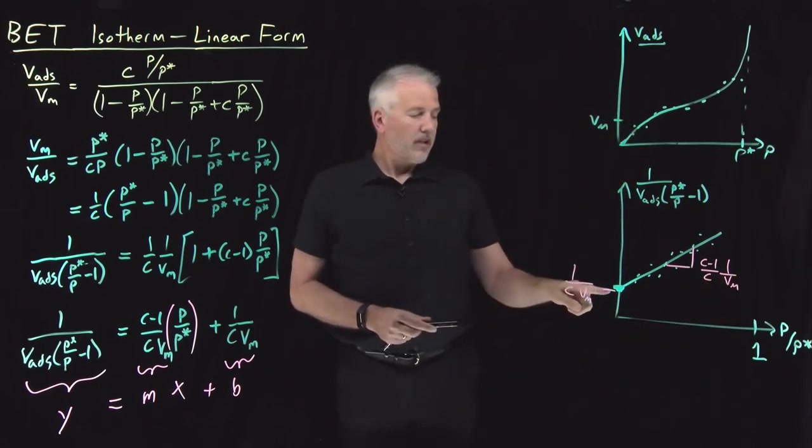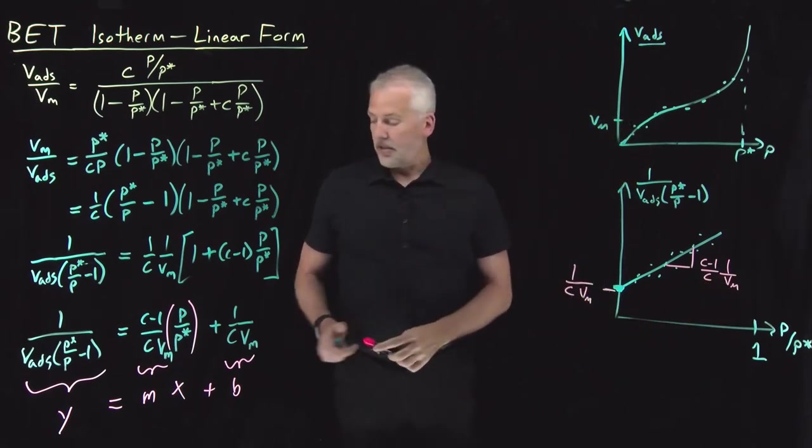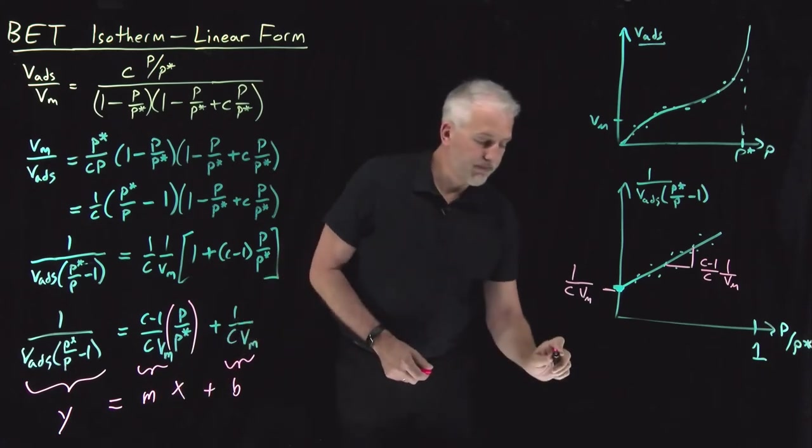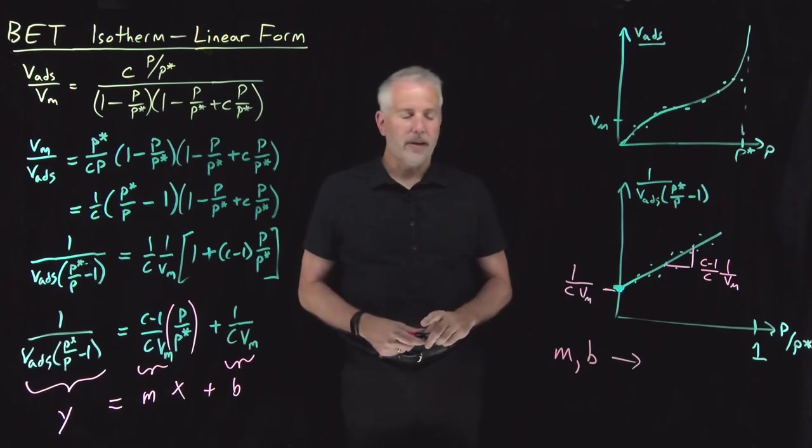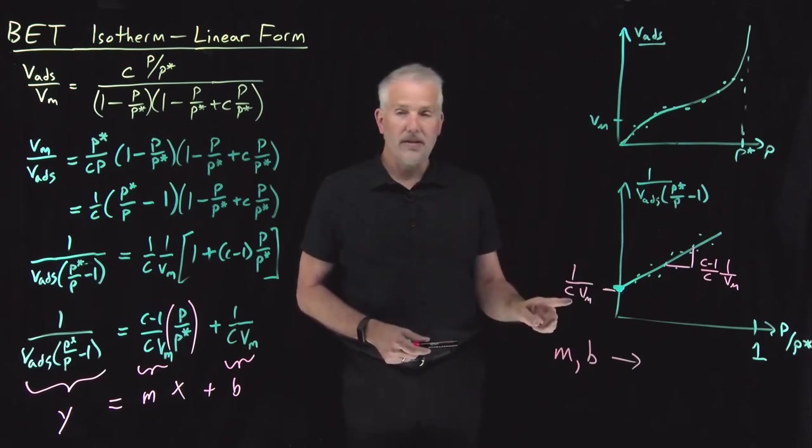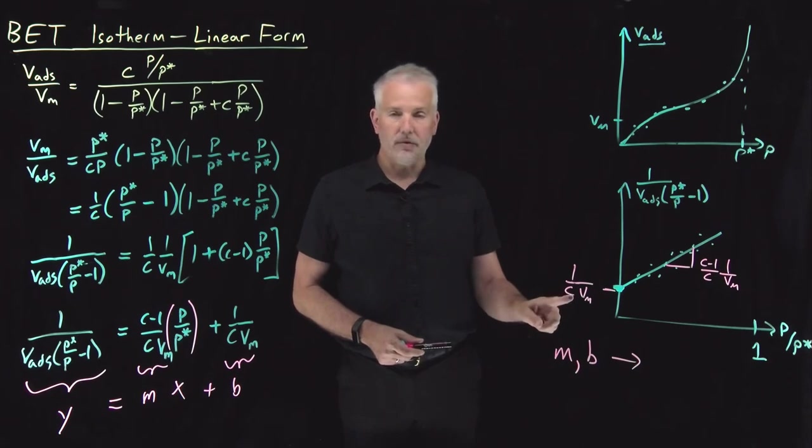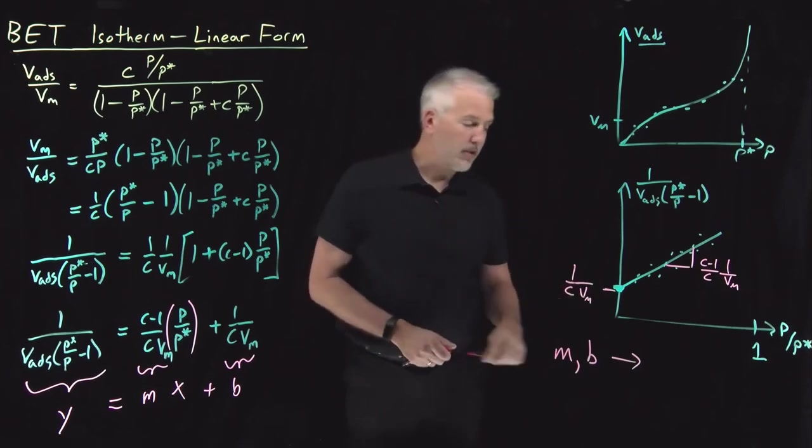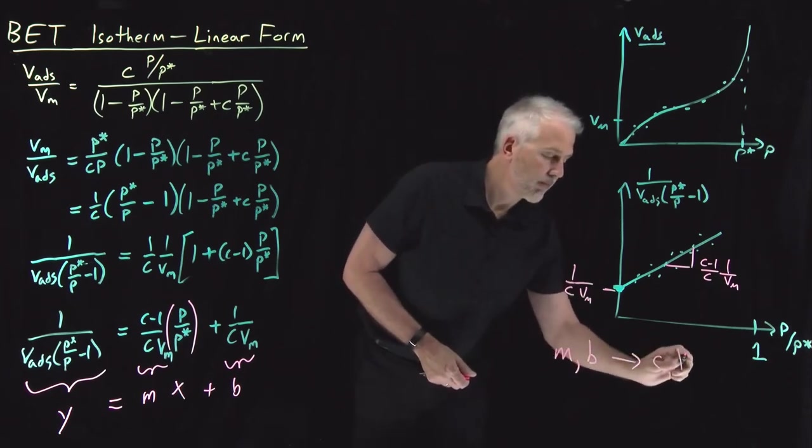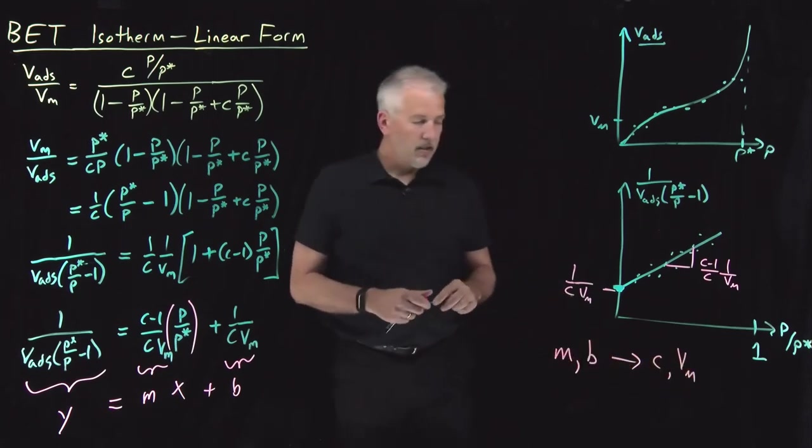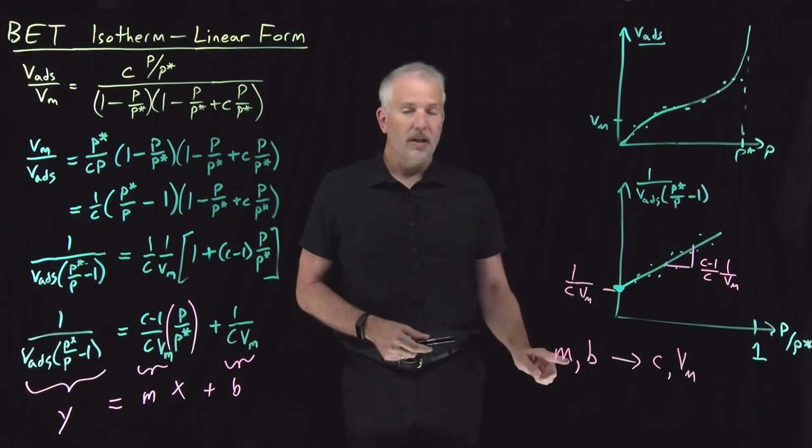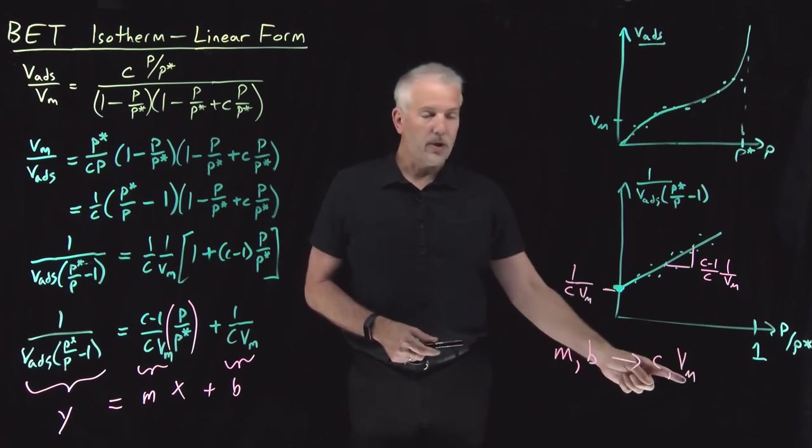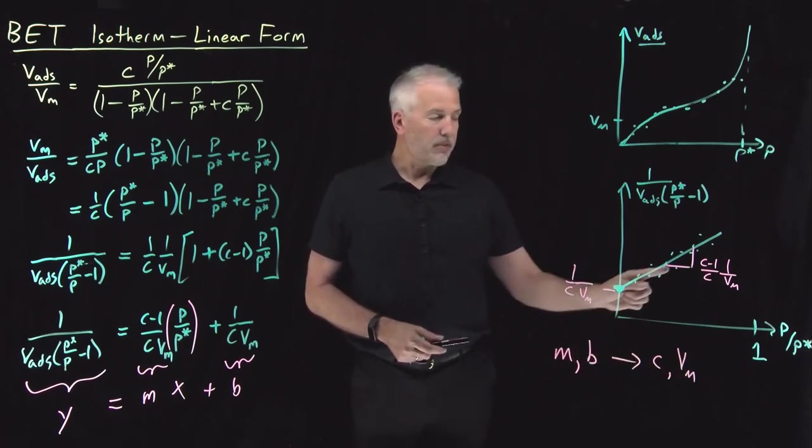So notice that I've got two constants, the slope and the intercept. If I get numerical values for the slope and the intercept, the two things I'm interested in learning about my gas are this BET constant, the value of C, and the monolayer volume, Vs of M. So by solving those two equations and two unknowns, I can obtain the value of C and the value of Vm from the value of the intercept and the value of the slope.